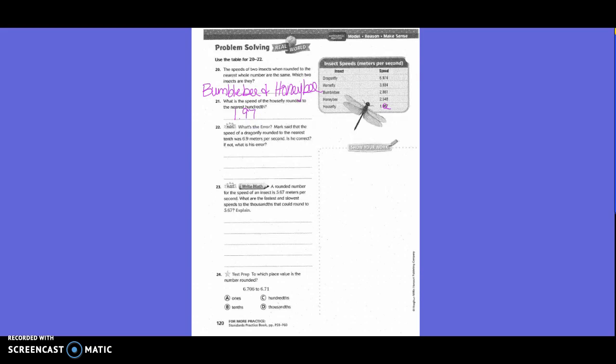Number 22, hot problem — what's the error? Mark said that the speed of the dragonfly rounded to the nearest tenth was 6 and 9 meters per second. He was incorrect because 7 is 5 or higher, making the 9 a 10. And then that makes the 6 a 7.